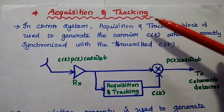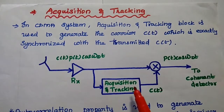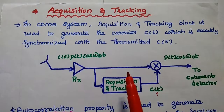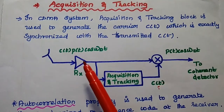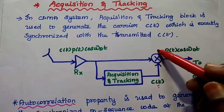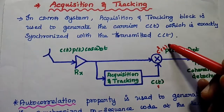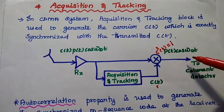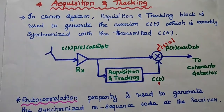Let's start with the acquisition and tracking block in CDMA. At the receiver side, this block is mainly used to generate the carrier signal exactly synchronized with the transmitted carrier signal. Only then can we recover the original information signal using a coherent detector. Here the input is C(t) · P(t) · cos(ωd·t). We multiply these two signals in a multiplier to get C²(t). Whenever C(t) on both sides are the same, C²(t) equals 1, and we can ignore the code signal from the received signal to recover original information. We use the autocorrelation property to generate the synchronized M-sequence code.